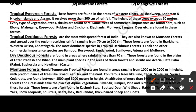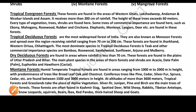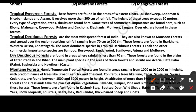The height of trees in these forests reaches up to 60 meters. Every type of vegetation — trees, shrubs, and grass — is found here. Trees of commercial importance include ebony, mahogany, rosewood, rubber, and cinchona. Animals found here include elephants, monkeys, langur, and deer.